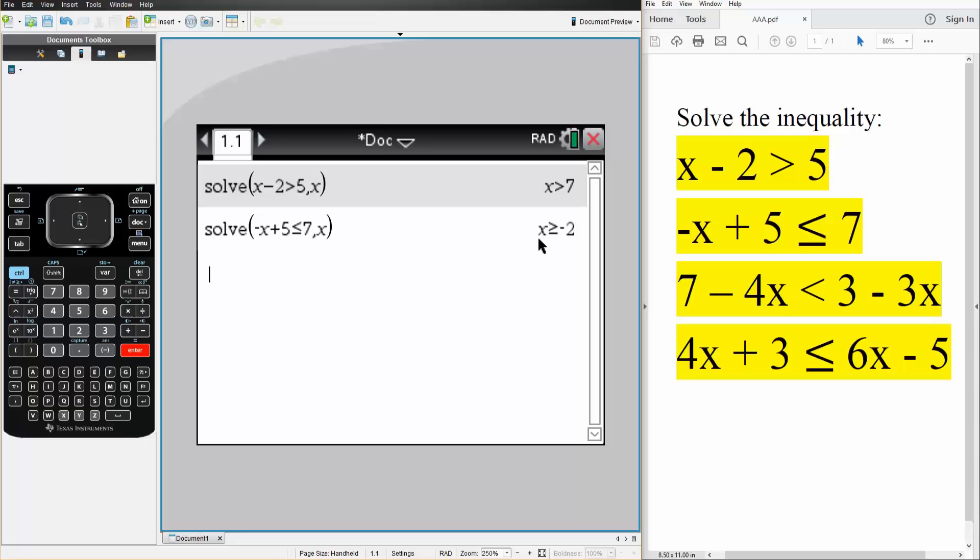So it's saying x is greater than or equal to minus 2. So that's the second problem. Now we'll do the last two. Same exact thing.